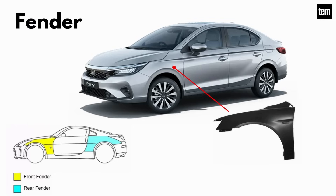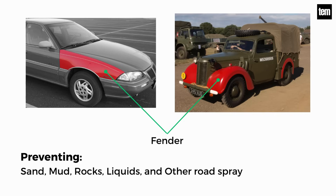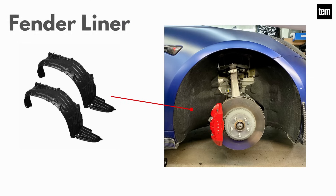Fender. A fender is the curved section between the door and the hood, and may sometimes also be referred to as a quarter panel. Its primary function is to protect the passenger compartment by preventing sand, mud, rocks, liquids, and other road spray from being thrown into the air by the rotating tire.